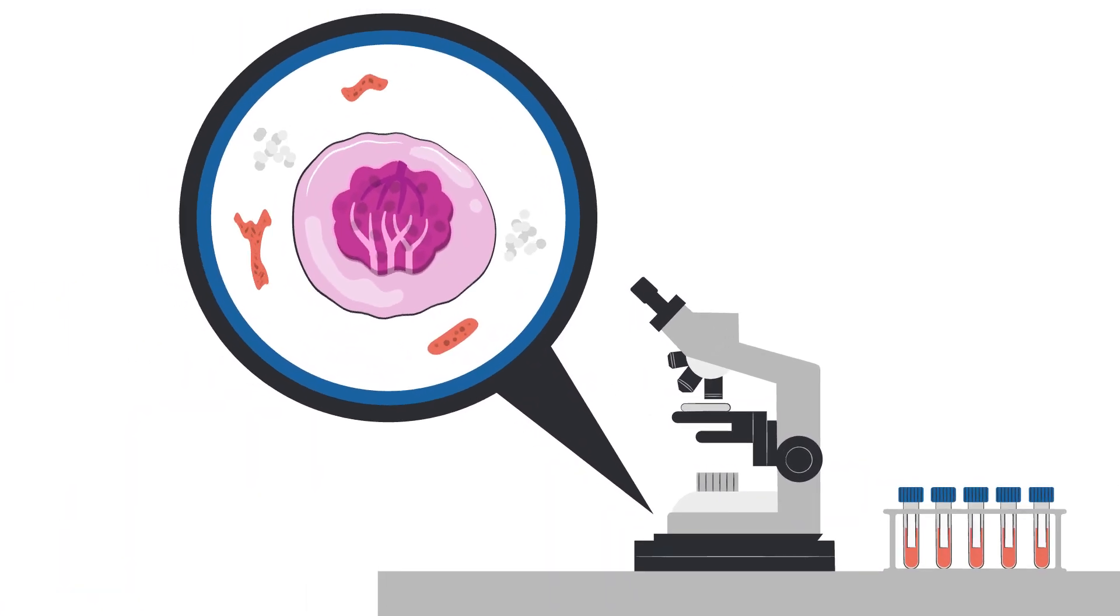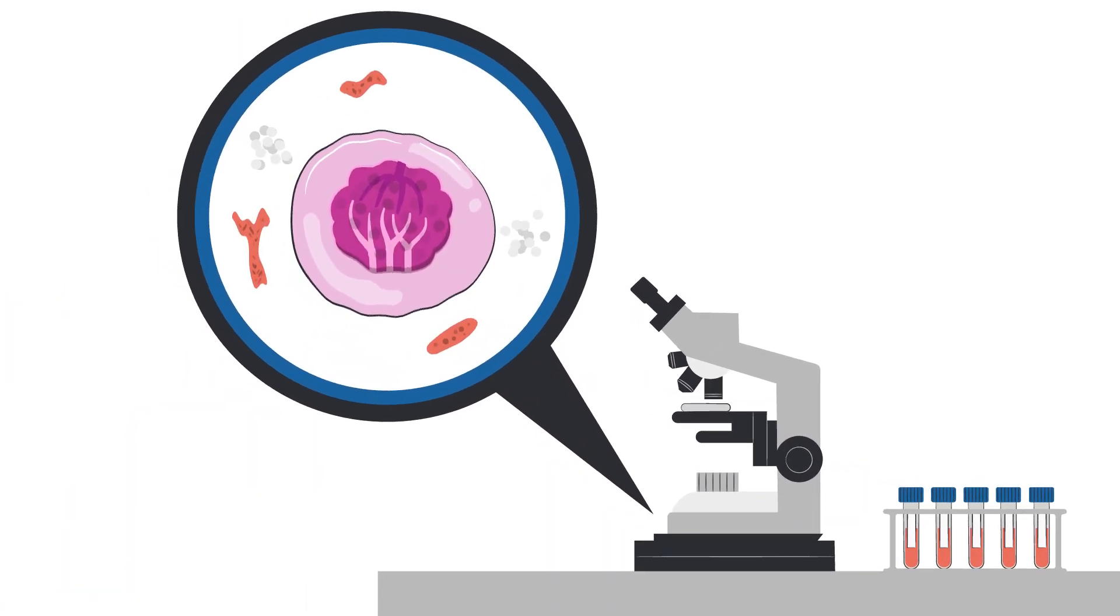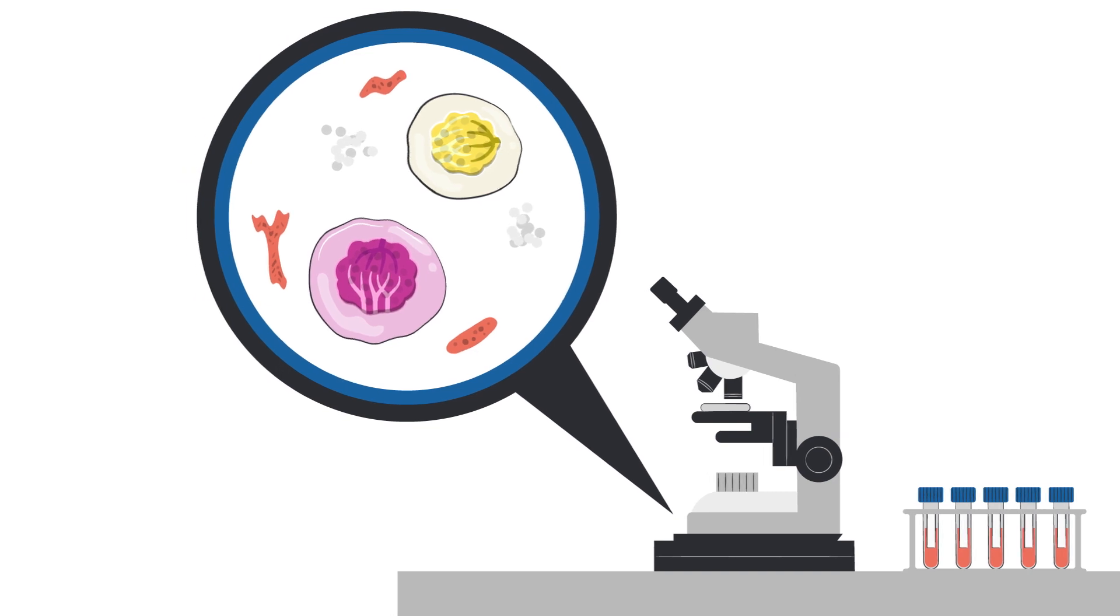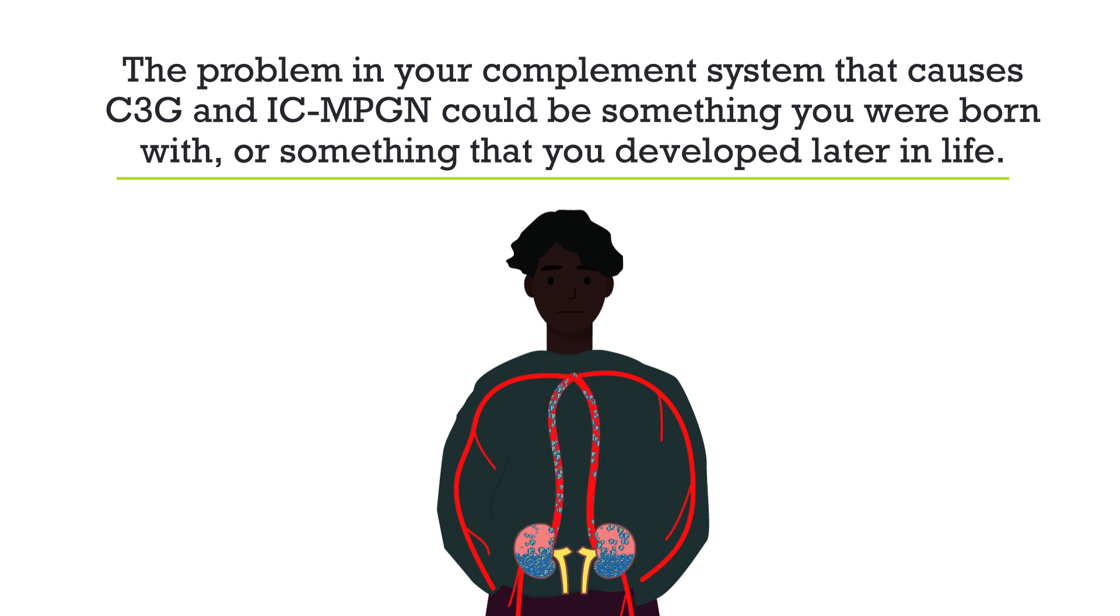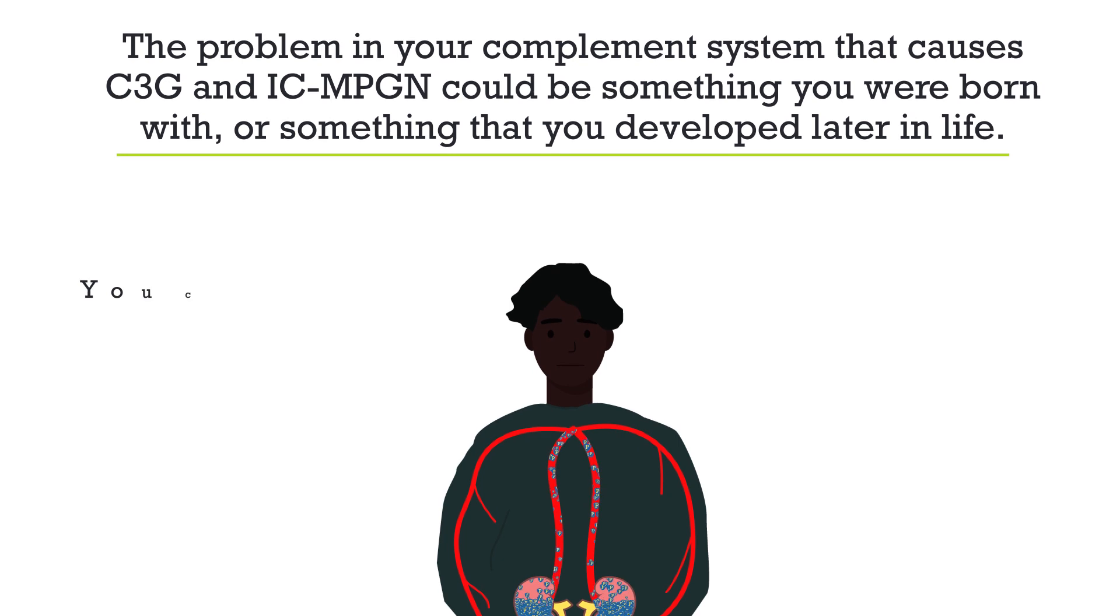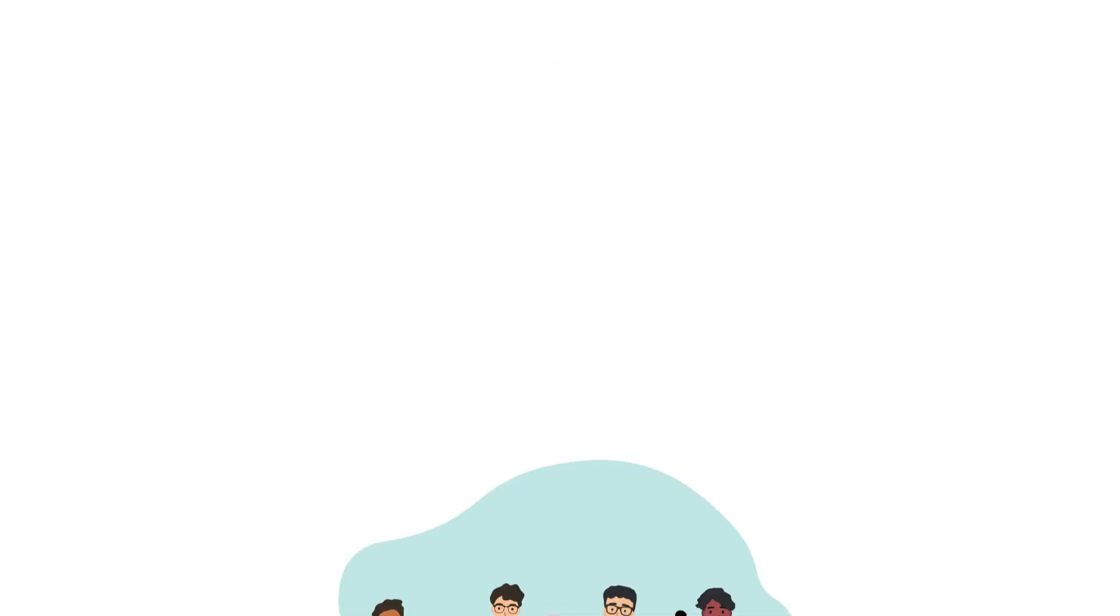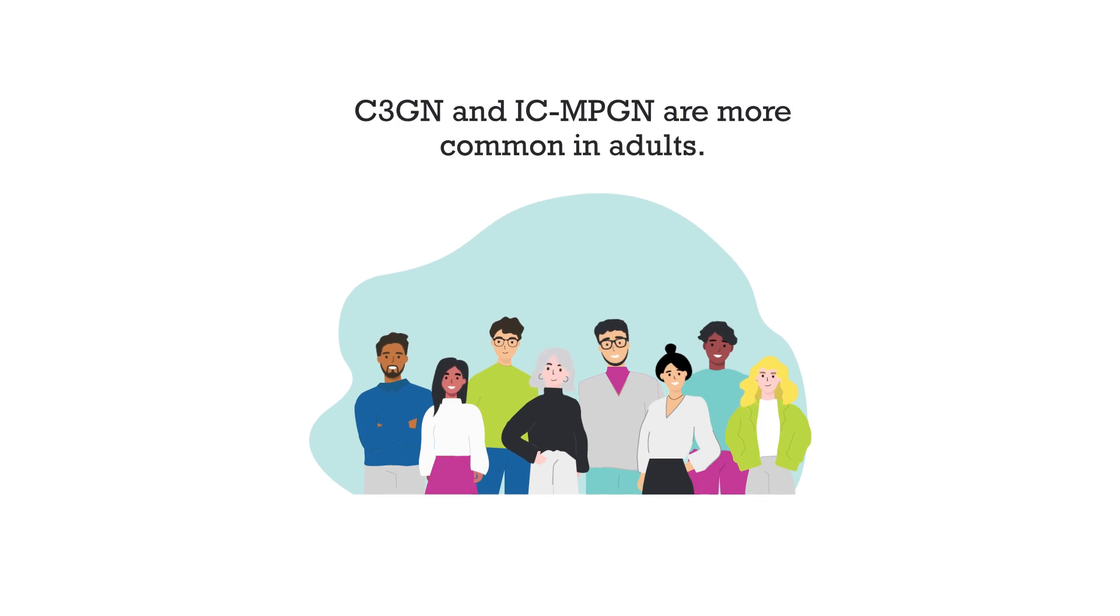The damage to kidney tissue looks different between C3G and ICMPGN. The problem in your complement system that causes C3G and ICMPGN could be something you were born with, or something that you developed later in life. You can get C3G or ICMPGN at any age. Of note, C3G and ICMPGN are more common in adults,